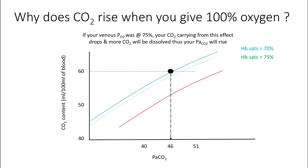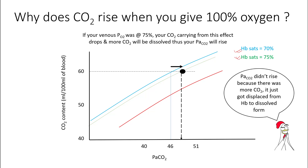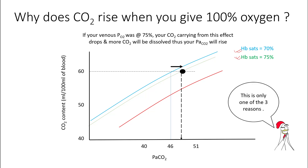So why does carbon dioxide rise when you give somebody 100% oxygen? This is seen mostly in COPD patients who have a tendency to retain CO2, and it happens because of the Haldane-Bohr effect. Normally venous saturations are around 70%. If you give somebody 100% oxygen, their oxygen carrying capacity is slightly higher than usual, so venous saturations can be higher. Because of the Haldane-Bohr effect, the carrying capacity of carbon dioxide at 75% saturation is lower than at 70%, so more carbon dioxide is transported as dissolved form and your PaCO2 rises. The PaCO2 didn't rise because there was more CO2 — it just got displaced from hemoglobin to dissolved form. This is only one of three reasons why CO2 rises.